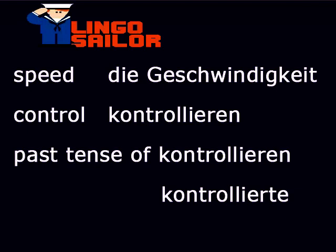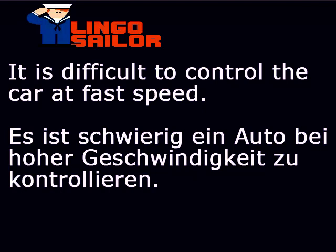The word speed means die Geschwindigkeit. And we've learned that control means kontrollieren. The past tense of kontrollieren is kontrollierte. Now try and translate this sentence: it is difficult to control the car at fast speed. Es ist schwierig — ein Auto zu kontrollieren — bei hoher Geschwindigkeit. In German word order: es ist schwierig, ein Auto bei hoher Geschwindigkeit zu kontrollieren.